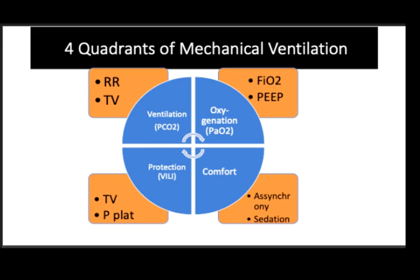Next, we should make sure we are protecting the patient's lungs from VILI. The two major components of lung protection are limiting tidal volume and plateau pressure. Last but not least, we want to ensure the patient is comfortable with no patient-ventilator asynchrony. Asynchrony can be determined by physical examination and waveform analysis. Sedation levels should be assessed, but remember that increasing sedation is not always the answer — if the patient is fighting the vent, there may be a serious underlying cause that must be fixed first.